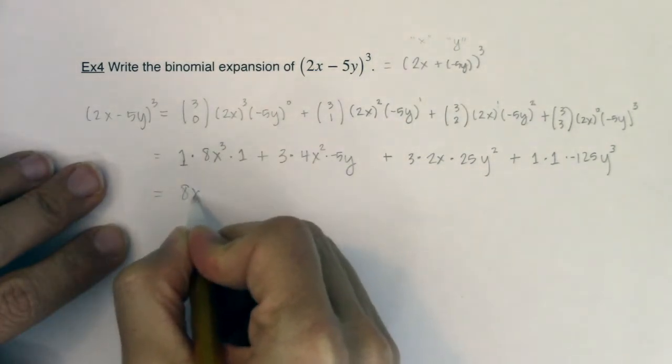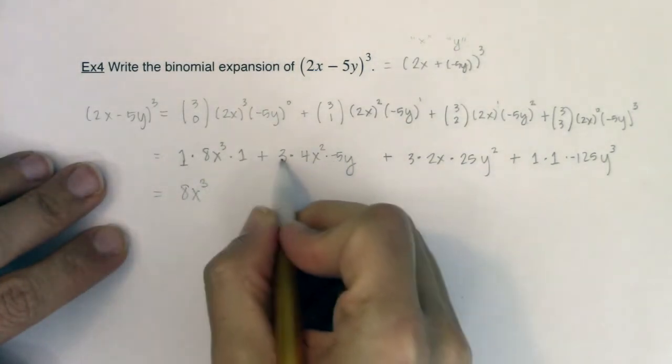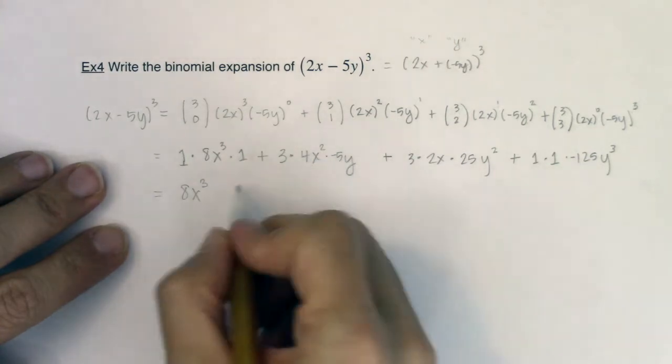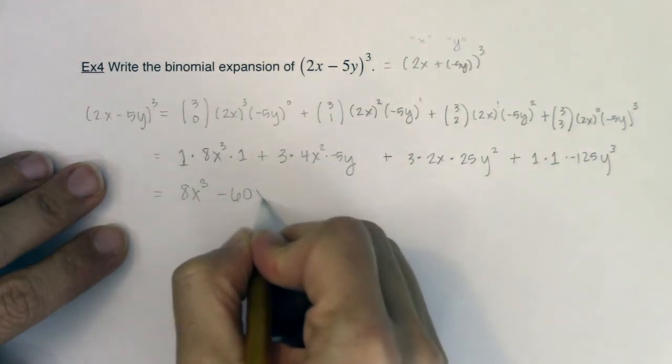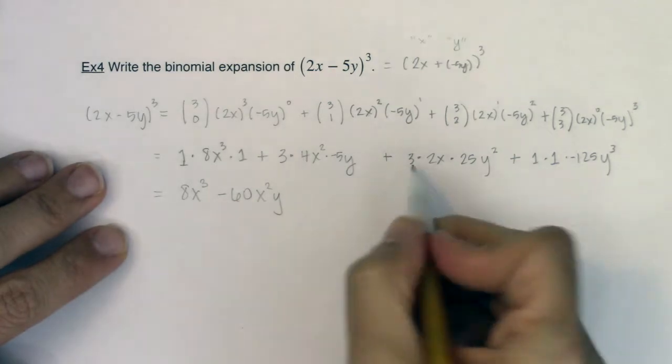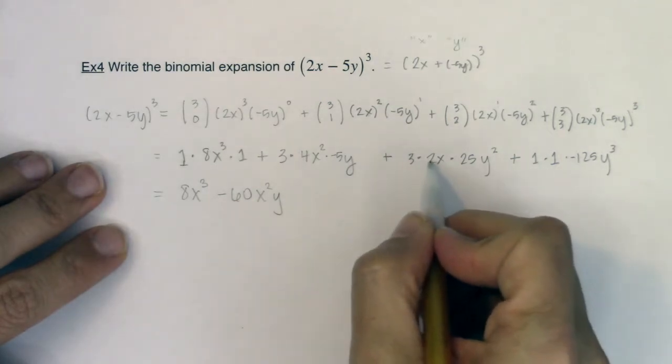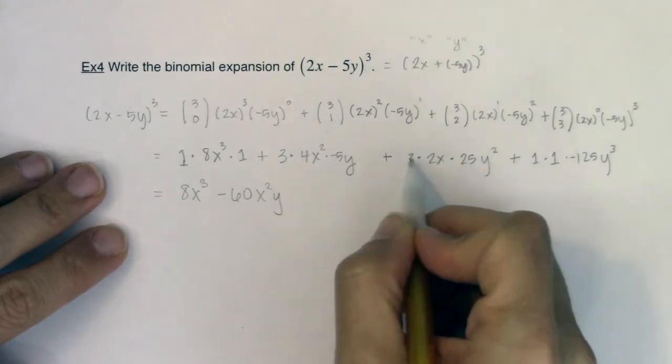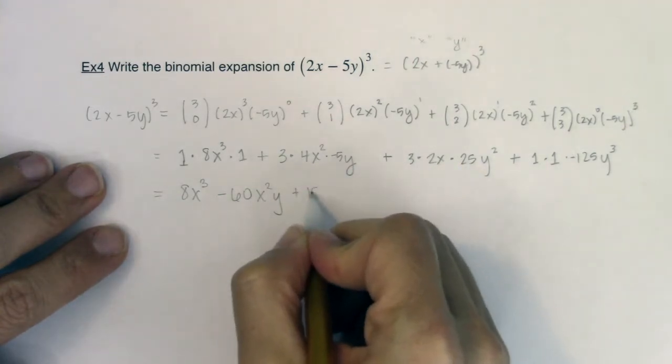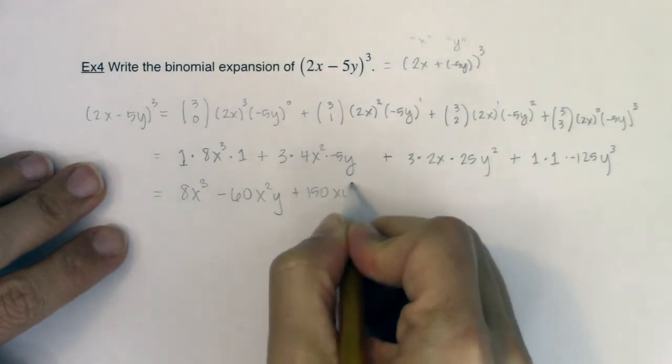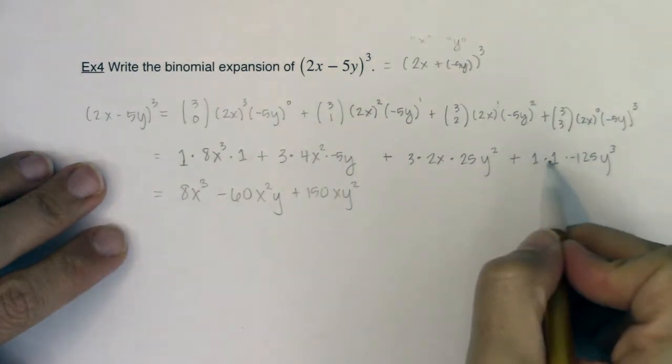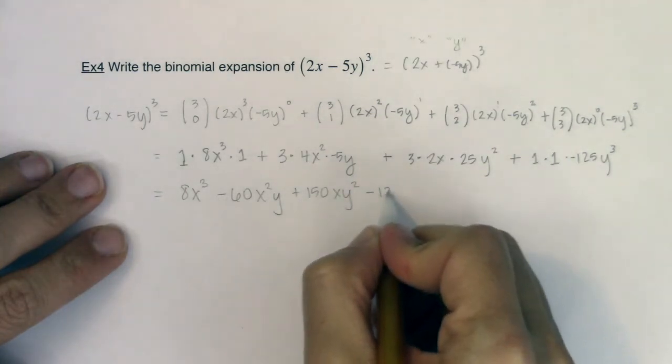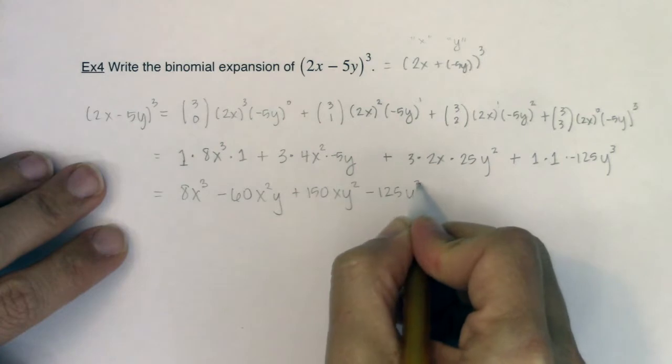So I've got 8x cubed here. 3 times 4 is 12. 12 times negative 5 is negative 60. And I've got x squared y. Let's do this. I'm going to do it this way. 2 times 25 is 50. 50 times 3 is 150. And I've got xy squared. 1 times 1 times negative 125, we've got negative 125 y cubed.